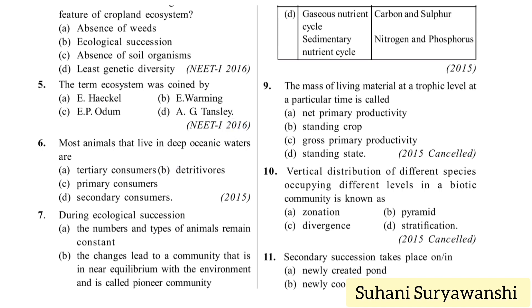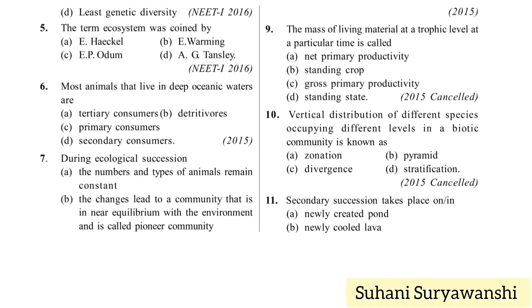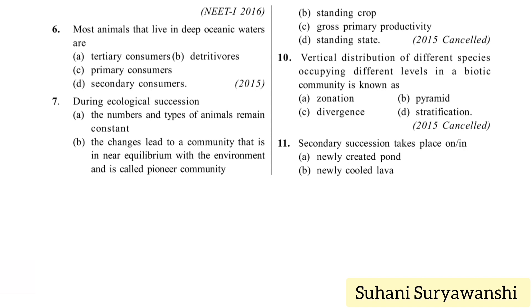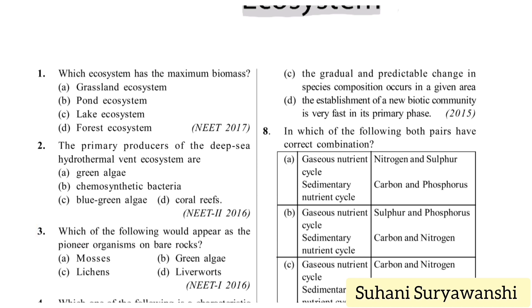During ecological succession, which statement is correct? First option says the number and types of animals remain constant — this is wrong, because the number and types of organisms do not remain constant. Second, the changes lead to a community in near equilibrium with the environment and is called pioneer community — wrong. Third, the gradual and predictable changes in species composition occur in a given area — this is the correct definition of succession.